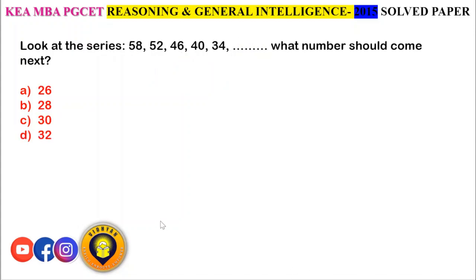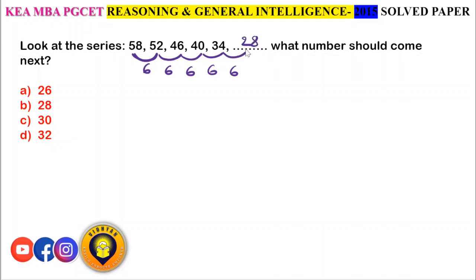Look at the series: 58, 52, 46, 40, 34, and dash. The difference between each consecutive pair is 6 — a constant difference. So the next number is 34 minus 6, which is 28. Option A, 28, is the right answer.